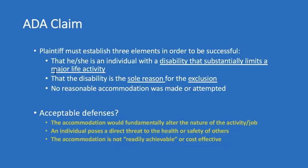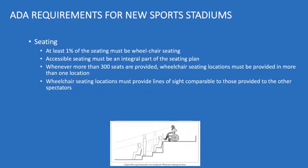Those are the three elements a plaintiff must prove to be successful in an ADA claim, and we'll get some practice applying these elements next week in class. At the end of the lecture set, I've included some ADA requirements for new sports stadiums. As you look more into the ADA, there are very specific requirements for different sectors of our industry — a whole set for recreation facilities, a whole set for aquatic centers, and a whole set for sports stadiums. These are requirements that must be followed when constructing new facilities under the ADA.